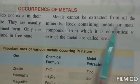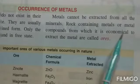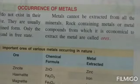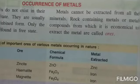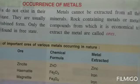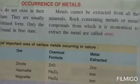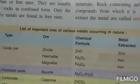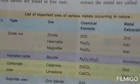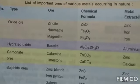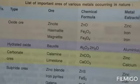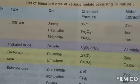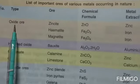Rocks that contain metal or metal compounds from which metal can be economically extracted is known as the ore of that metal. If from a big piece of rock we get only a very small amount of metal, we can't call it an ore of that metal, because a lot of money, resources, and energy would be wasted in extraction. But if a large amount of metal can be extracted from that rock, then only we call it the ore of a particular metal.